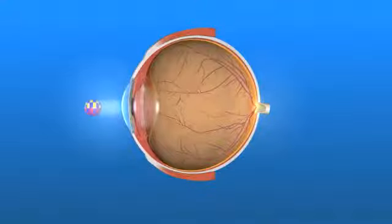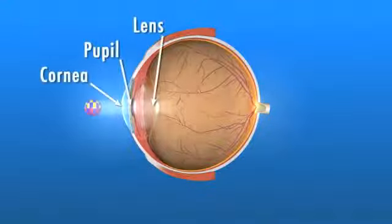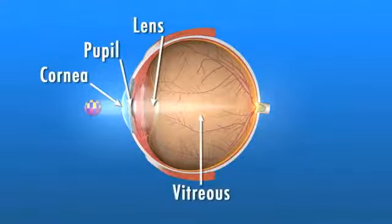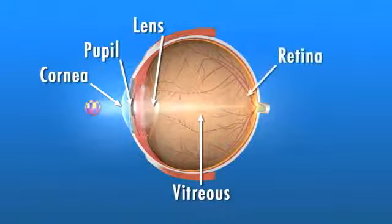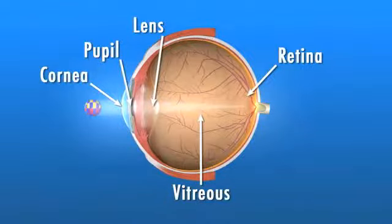For us to see the world around us, light enters the front of the eye and passes through the vitreous before it's focused on the retina. The vitreous is the clear, gel-like fluid inside of the eye. The retina is the light-sensitive tissue lining the back of the eye.